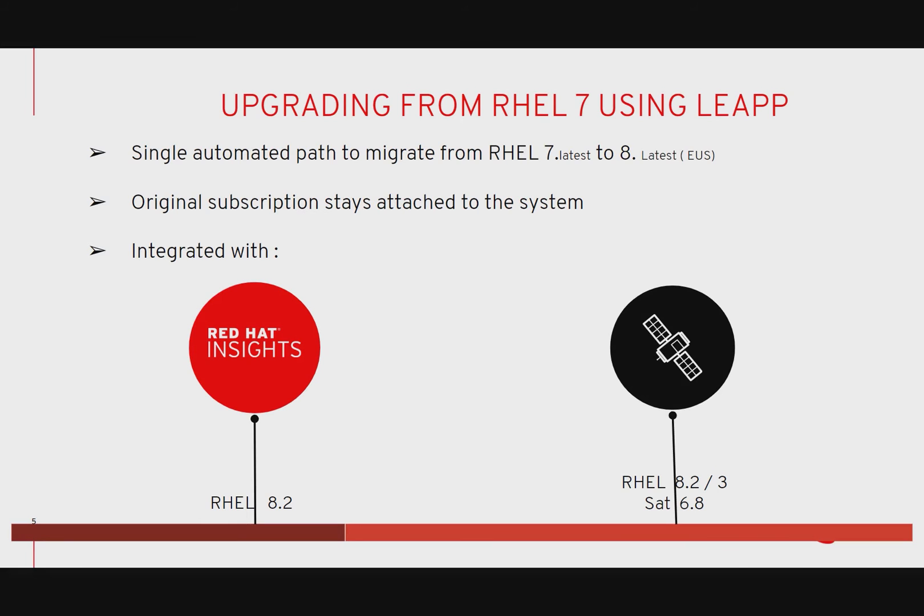Upgrading in-place from RHEL 7 to RHEL 8 is accomplished using the Leapp utility. The utility provides a single automated path from the latest version of RHEL 7 to the latest version of RHEL 8 with EUS. You do not need to be on EUS in order to run the upgrade. At the time of this video, the path supported is 7.8 to 8.2. The original subscription stays attached to the system and the tool can process custom applications, custom repositories, and third-party applications.